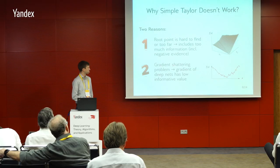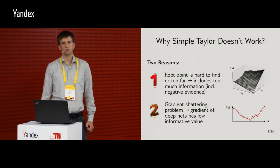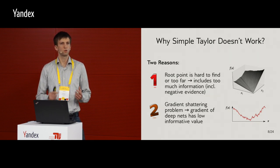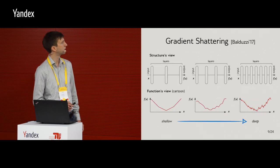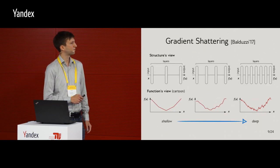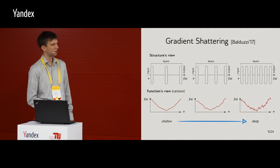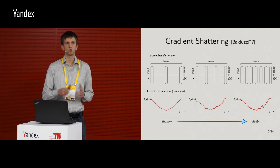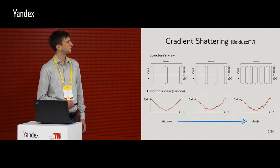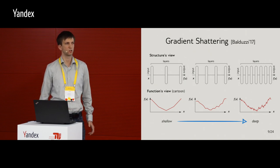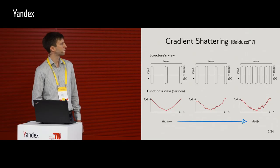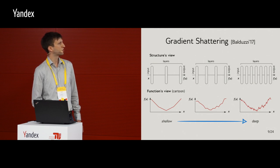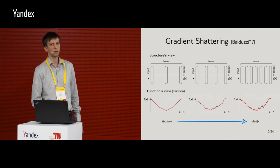Another problem is gradient shattering, and the idea is that when you have deep nets, the gradient information, well, the gradient loses its informative structure. And this is a problem that hasn't been studied very extensively, and only recently there was a paper by Balduzzi. And the idea is that if you have a shallow network, the number of linear regions of your deep ReLU will grow linearly or maybe quadratically. And on the other hand, if you have a deep layer, then the number of linear regions will really become exponentially large.